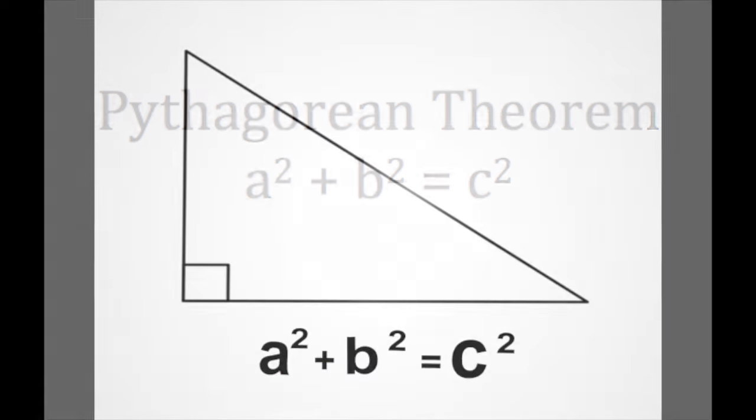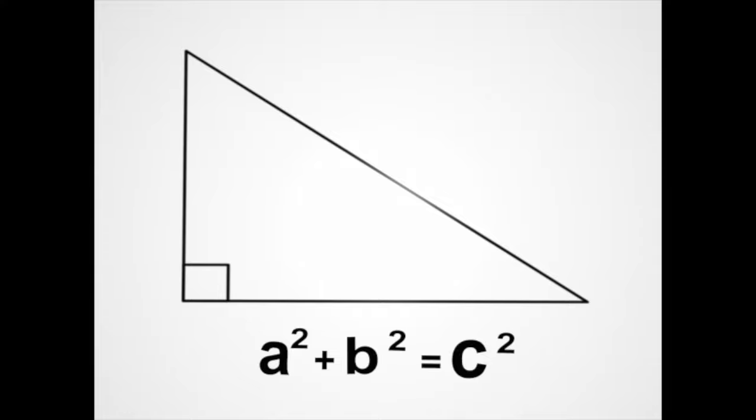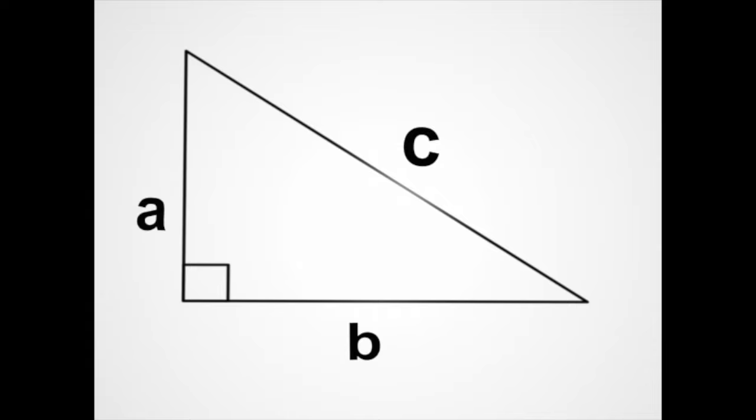How do we use it? By using the Pythagorean Theorem, we can find the missing measure of one of the sides of a right triangle. It is very important to remember that side a is a leg, side b is a leg, and side c is always the hypotenuse.